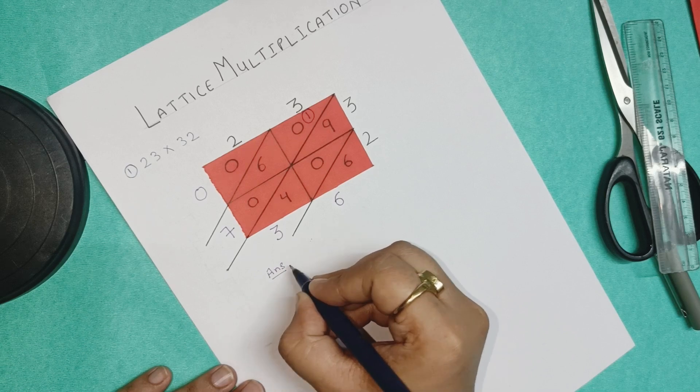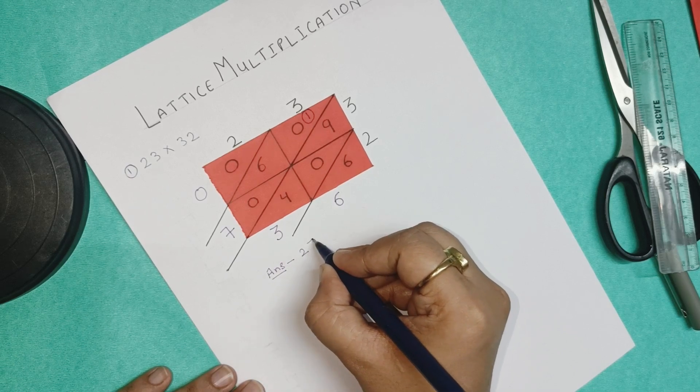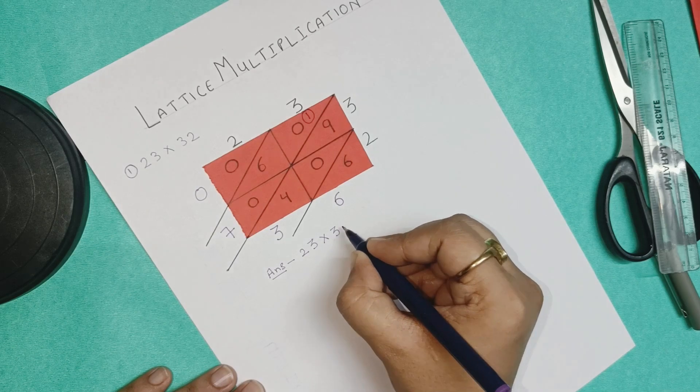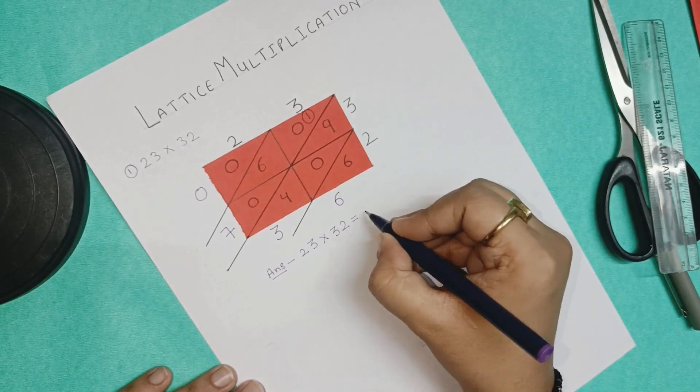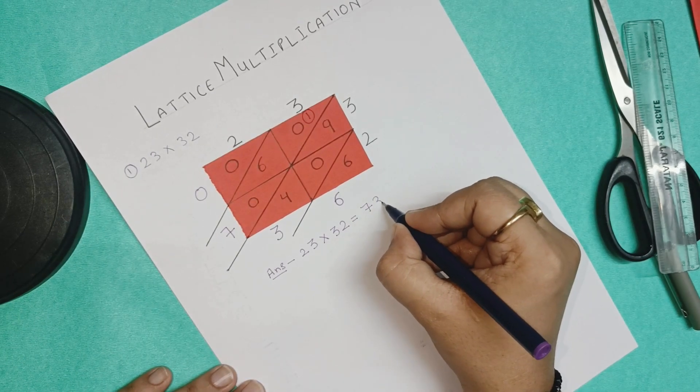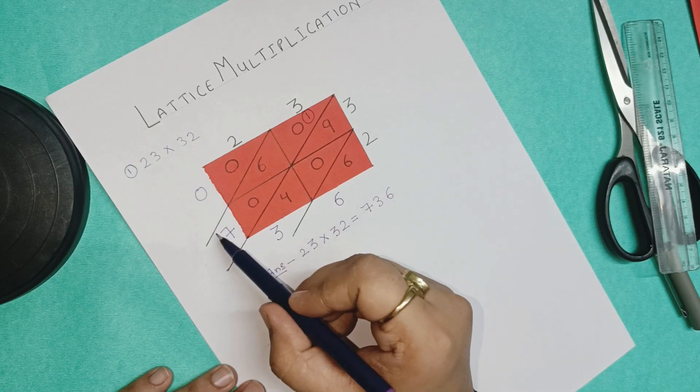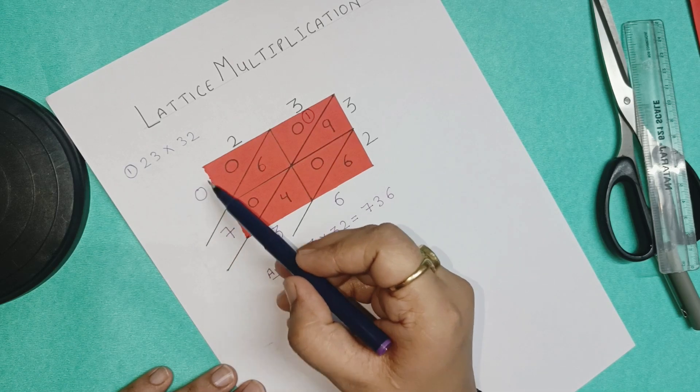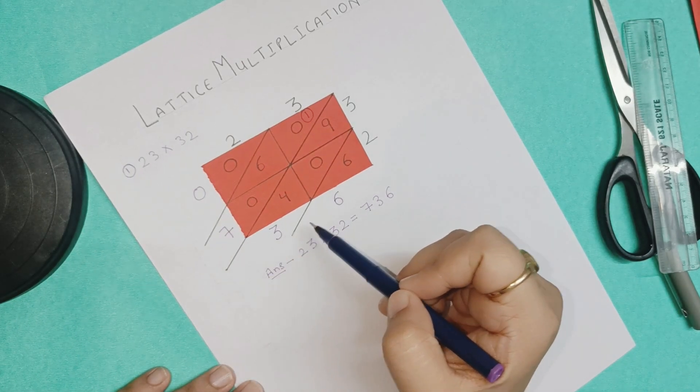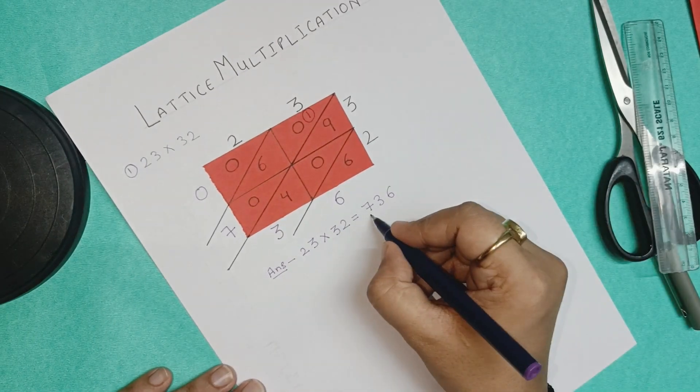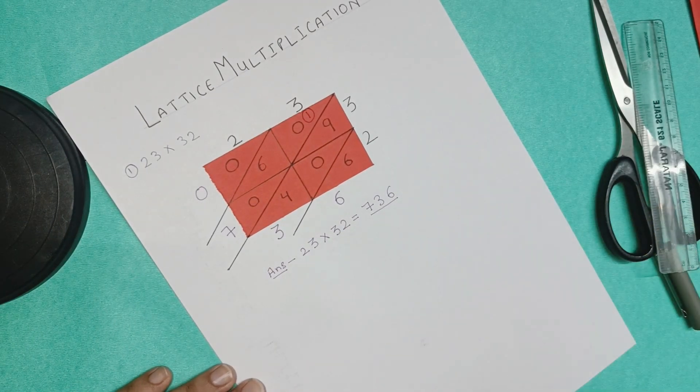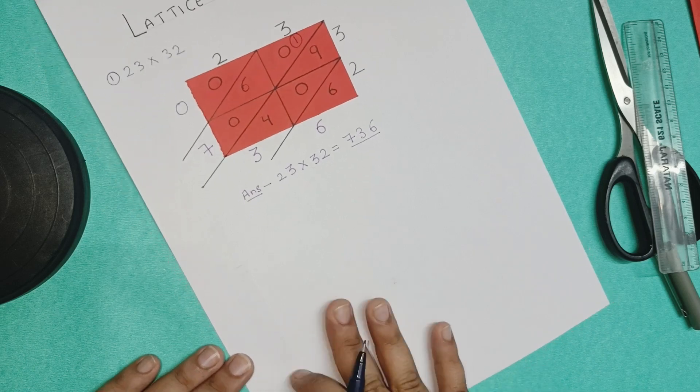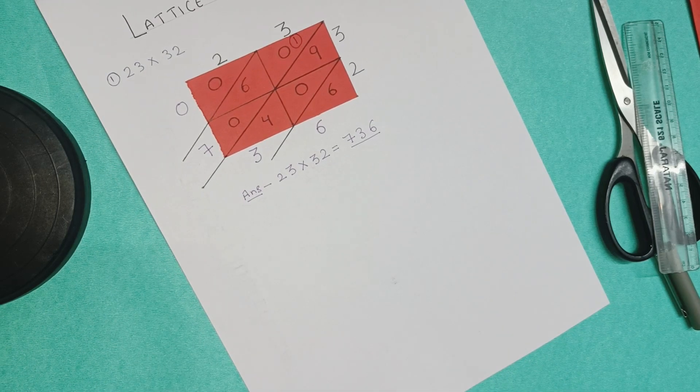Answer is 23 into 32 is equals to 736. 736. We write in this particular manner. If there was something other than 0 here, we would have written that. Okay, it is 736 over here. Now answer is done. Let us move to the second example.